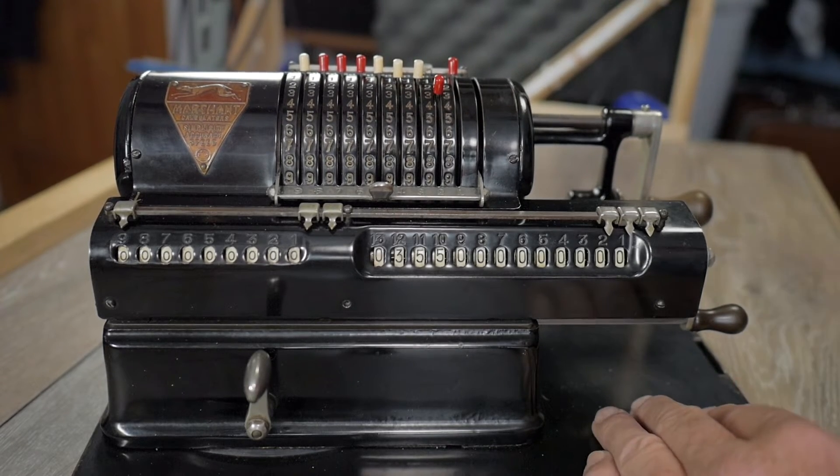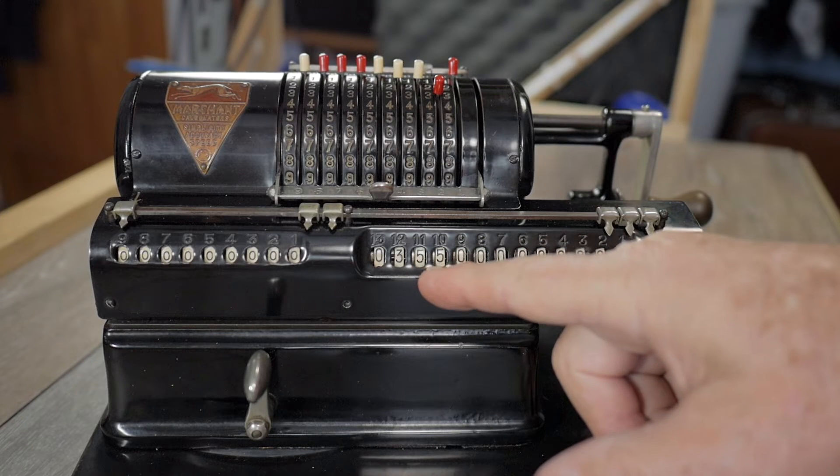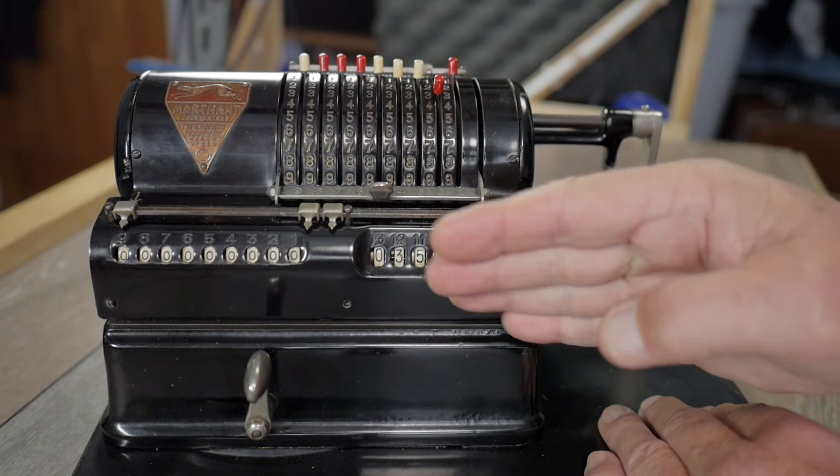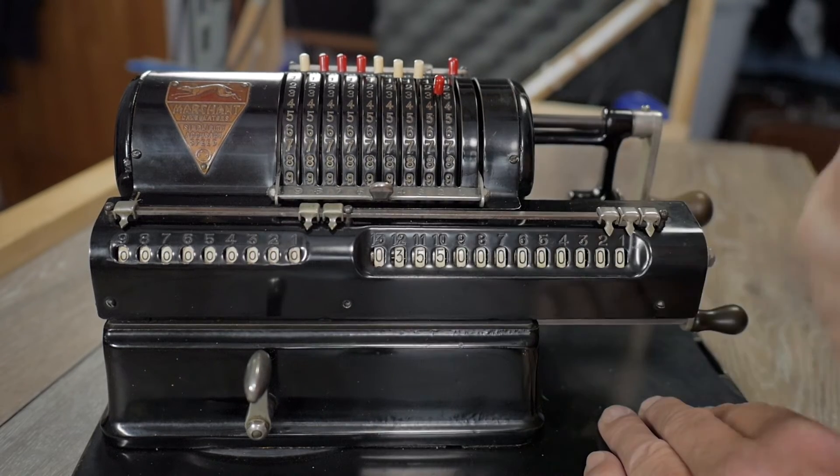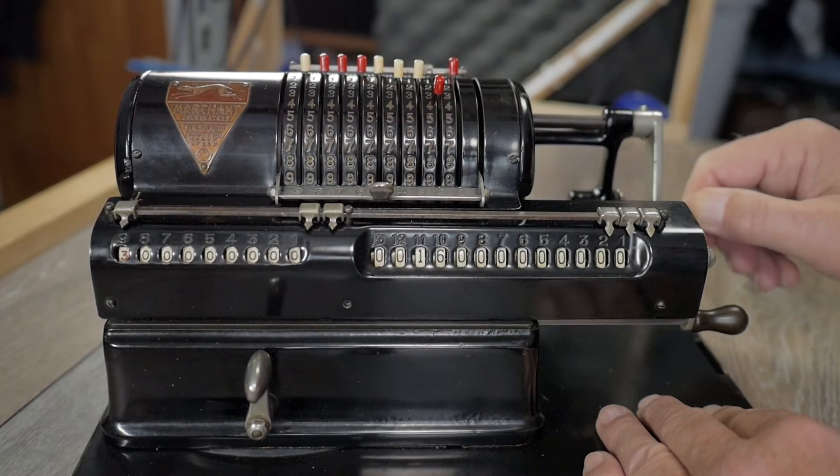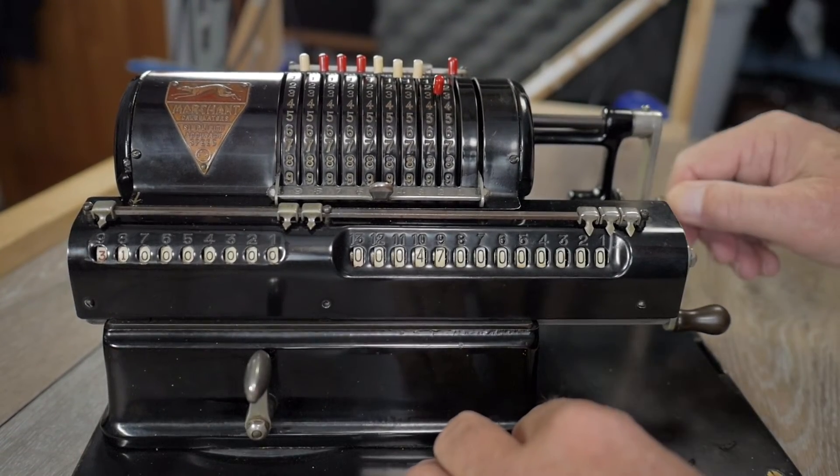So the way this works is I just do repetitive subtraction until the remainder is smaller than the 113, and then I move the carriage one row to the left and keep doing it. So now I go back, and I keep doing it.